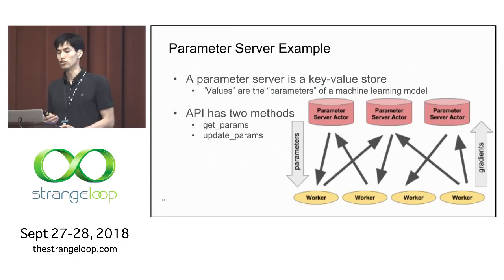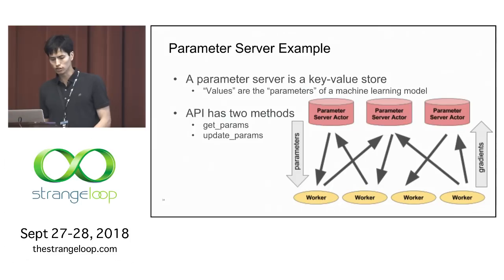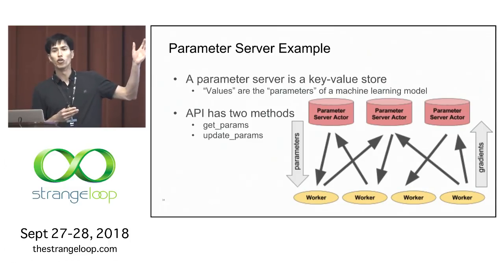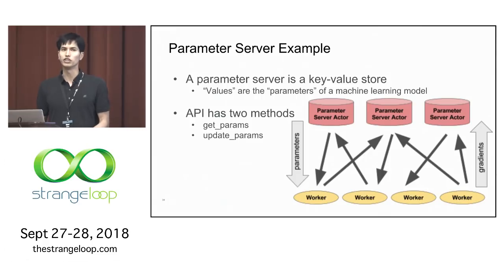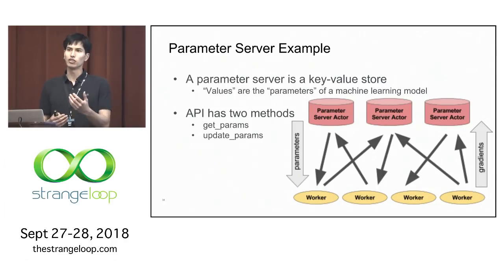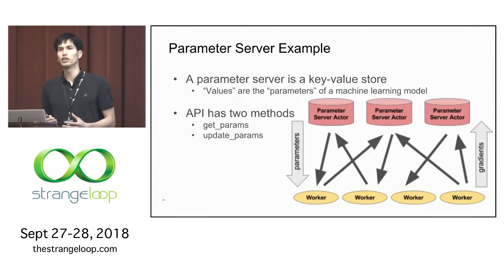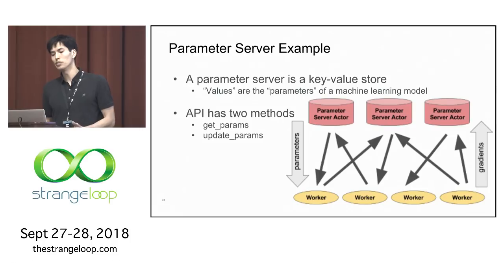I'll show how you can use these tools together to implement an interesting example. If you're familiar with the parameter server—which comes up in distributed machine learning training—the setup involves one or more parameter server processes and one or more worker processes. The parameter server is essentially a key-value store holding the weights of a machine learning model. Workers compute updates and send them to update the parameters, running this in a loop. A parameter server is typically implemented as a standalone system, but here we'll implement it in a few lines of Python on top of Ray.